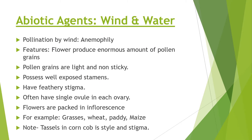First of all we will take abiotic agents like wind and water, and out of these two the wind is the most common type of agent. The flowers which are pollinated by wind are called anemophilous flowers, and such a phenomenon is called anemophily.